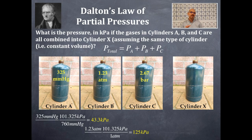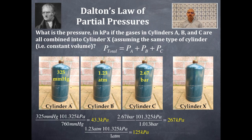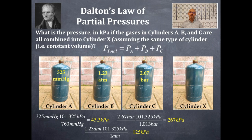I'm keeping the correct number of significant figures throughout, because unit conversion factors have an infinite number of significant figures. Cylinder C is 2.67 bar; using 101.325 kPa per 1.013 bar, that converts to 267 kilopascals. Notice that with significant figures, the value in kilopascals is essentially the same number as in bar, because bar and kilopascal are very close in magnitude.